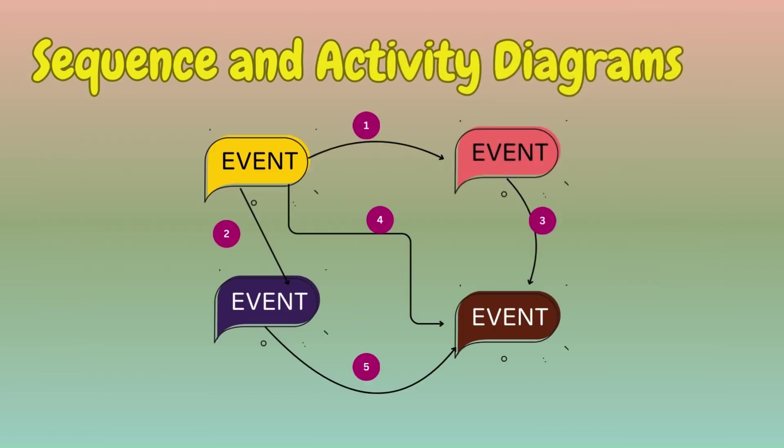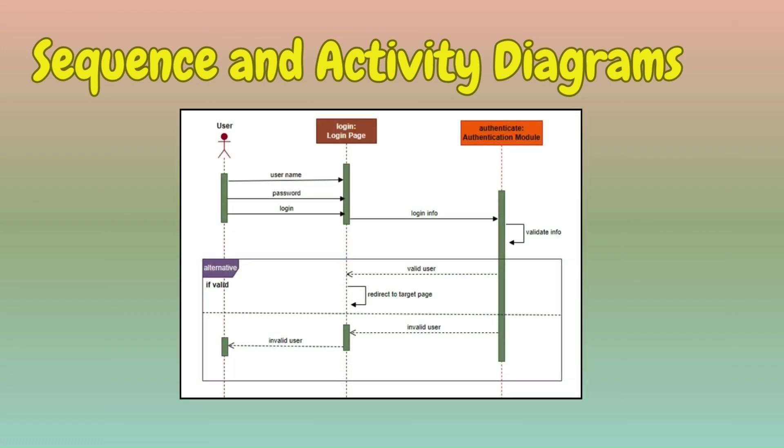Step 4 is creating sequence and activity diagrams. In this step we describe sequences of events or system control flows using sequence and activity diagrams. These visual representations help in explaining complex concepts effectively — a sample sequence diagram for login is shown here.